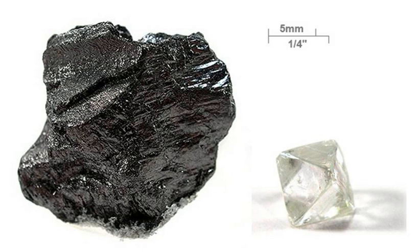Some meteorites contain microscopic diamonds that were formed when the solar system was still a protoplanetary disk. Microscopic diamonds may also be formed by the intense pressure and high temperature at the sites of meteorite impacts. In 2014, NASA announced a greatly upgraded database for tracking polycyclic aromatic hydrocarbons (PAHs) in the universe. More than 20% of the carbon in the universe may be associated with PAHs, complex compounds of carbon and hydrogen without oxygen.